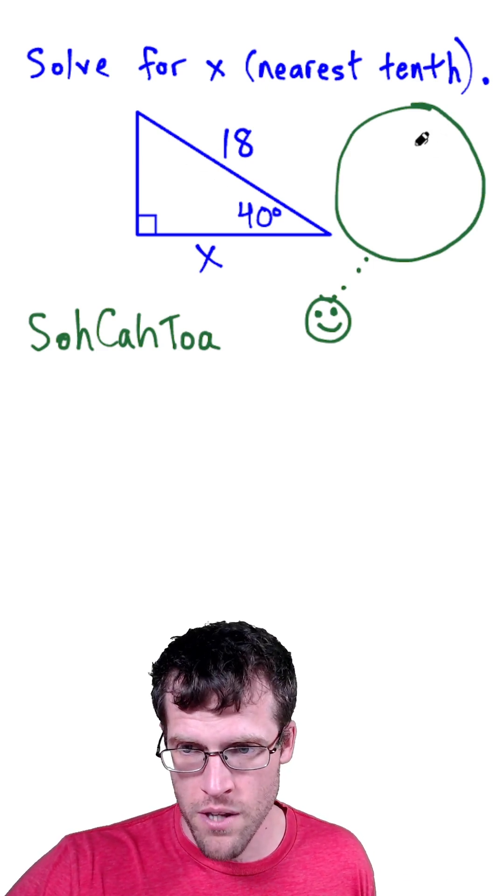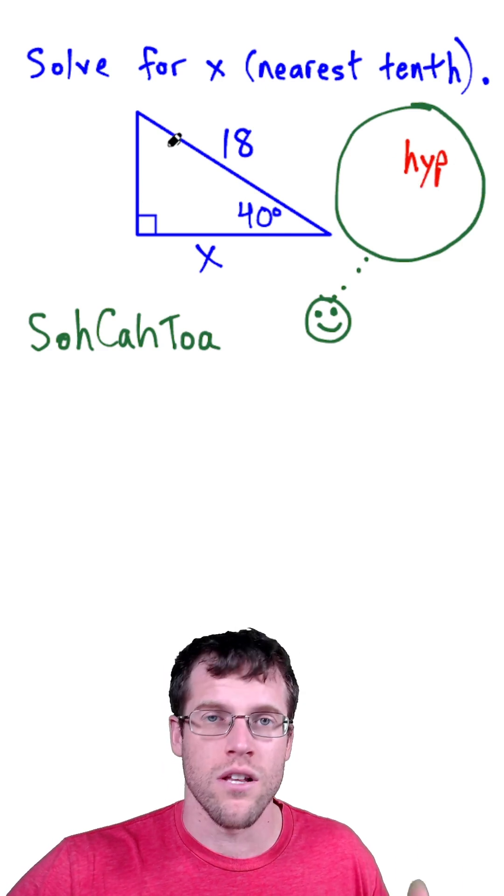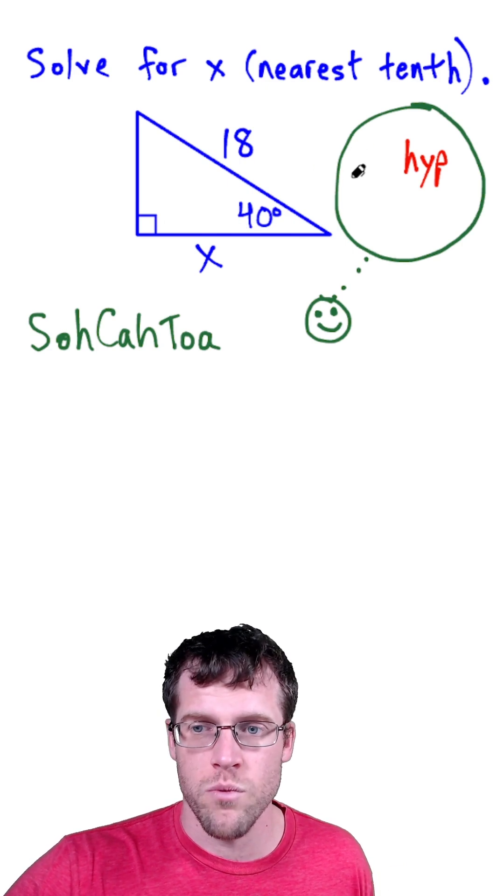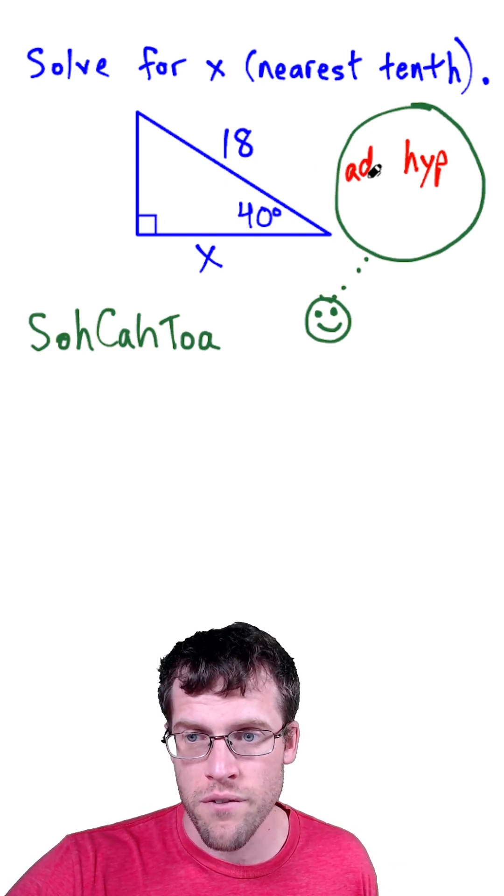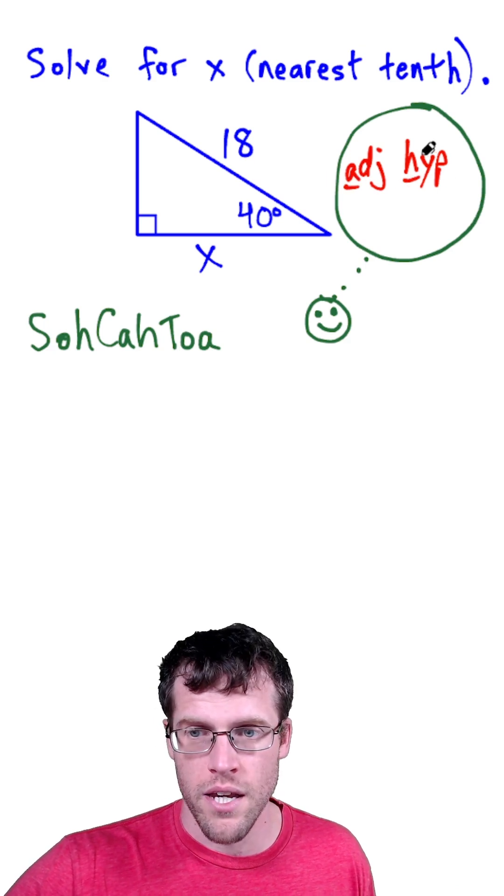We know that the hypotenuse is 18 units long. The hypotenuse is the side across from the right angle, it's the longest side of a right triangle. Our goal is to find x, which is the side adjacent to the 40-degree angle. So we're saying adjacent hypotenuse, A-H.